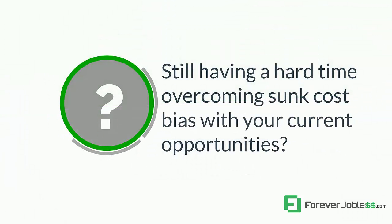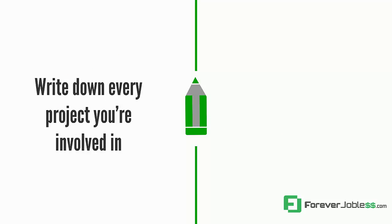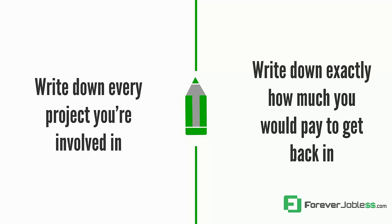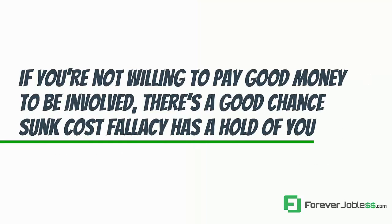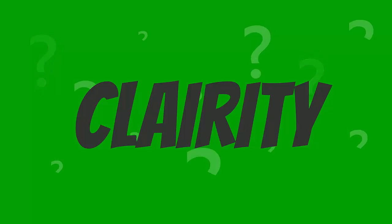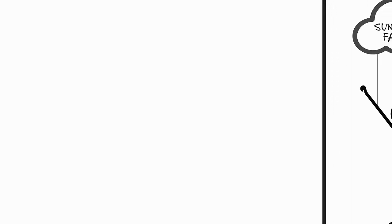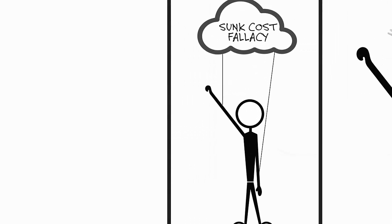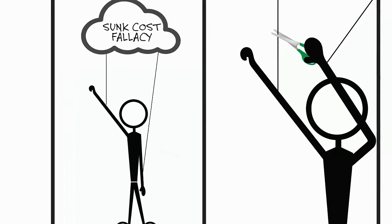If you still think you'll have a hard time overcoming sunk cost bias with your current opportunities, try this. Write down every project you're involved in. Imagine you're no longer allowed to be involved in any of these projects. Now, next to each project, write down exactly how much you would pay to get back in. It's a quick way to be honest with yourself. If you're not willing to pay a good amount of money to be involved, there's a good chance sunk cost fallacy has a hold of you — otherwise you'd have already quit. If there are projects on your list you wouldn't be fighting to get back in, you shouldn't be letting the sunk cost fallacy hold a cloud over you and use you as a puppet to work on projects you shouldn't be in.